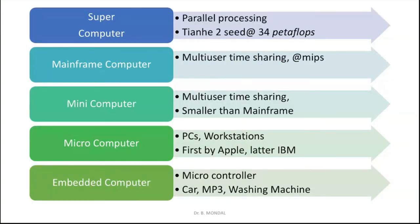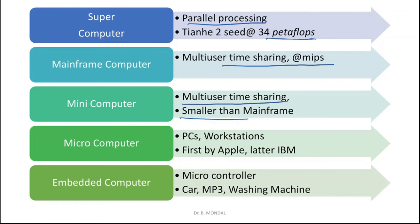The fifth generation runs from 2010 onwards — artificial intelligence is the big thing now. Processing and semiconductors became the backbone of this generation's design and development. There is a summarization of all five generations. Regarding types: supercomputers are used for parallel processing; mainframe computers support multi-user time sharing; microcomputers are smaller than mainframes; workstations were introduced first by Apple, later by IBM; and embedded computers like microcontrollers are used in cars, MP3 players, and washing machines.